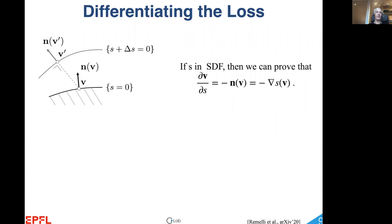Given a true distance function S and an infinitesimal perturbation delta S of it, the point on the surface will move in direction normal to the surface, which is also the gradient of S. We can therefore prove that the derivative of a vertex location is the gradient of S at that location.